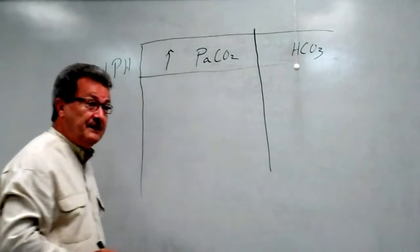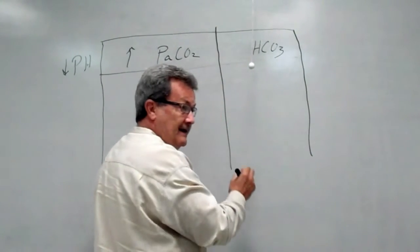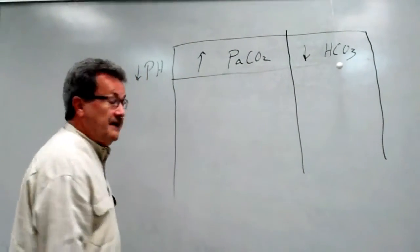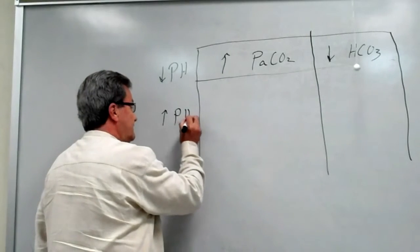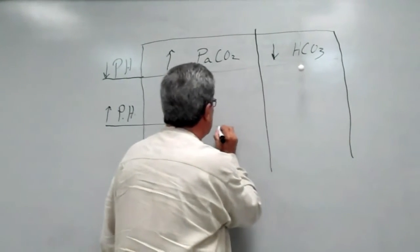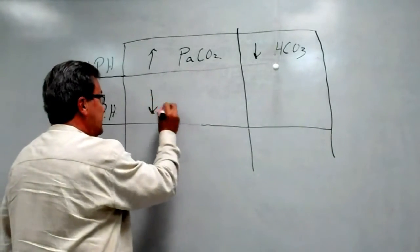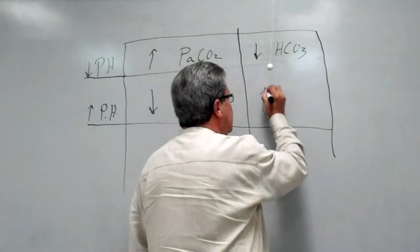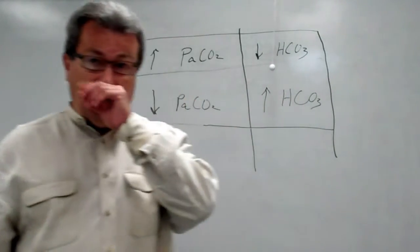On this side over here, if I had a decreased bicarb, it would cause a decreased pH. Another thing we look at in interpretation is, what if I have an increased pH? If I've got an increased pH, that could be caused by a decreased PaCO2 or an increased bicarb. That's really simple.